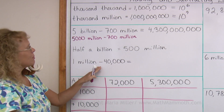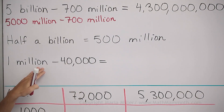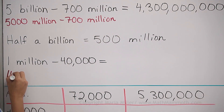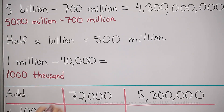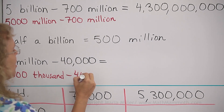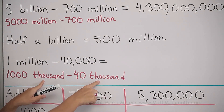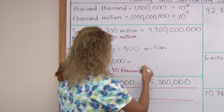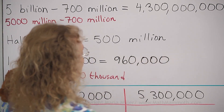One million minus forty thousand. Think of the million as thousand thousands. Let me write that here — this is thousand thousands. And then this is, of course, forty thousand. Now you can ignore the thousands for a little while, or think of them as apples. Thousand minus forty — nine hundred sixty, right? And that's how many thousands we have, so three zeros in the end.